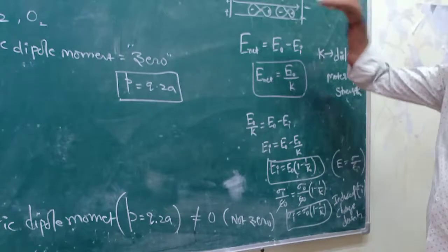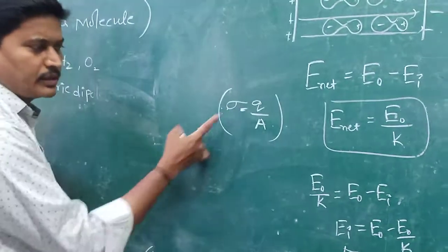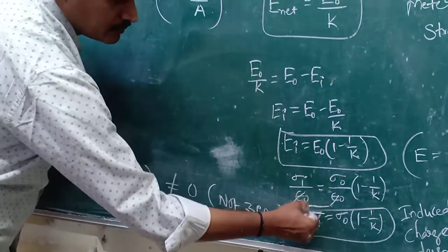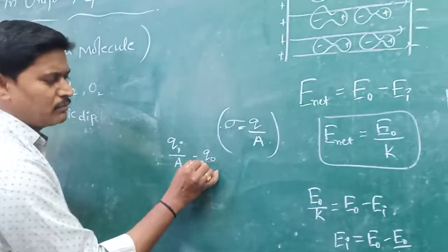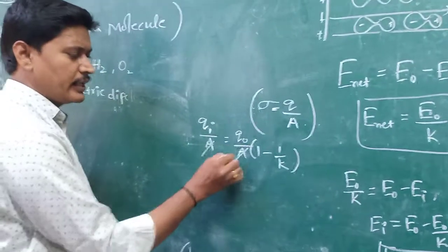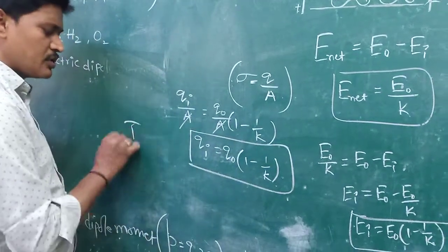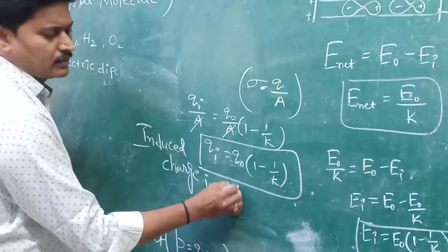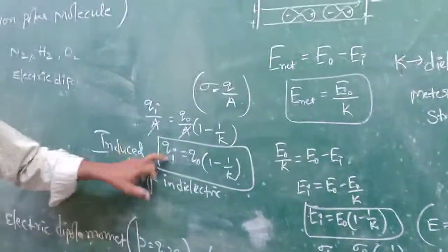The induced charge inside the dielectric: σᵢ = Qᵢ/A — this is surface charge density per unit area. Substituting: Qᵢ/A = Q₀/A × (1 − 1/K). Cancelling A, we get Qᵢ = Q₀(1 − 1/K). This is the induced charge inside the dielectric. So we have derived the induced electric field, induced charge density, and induced charge.